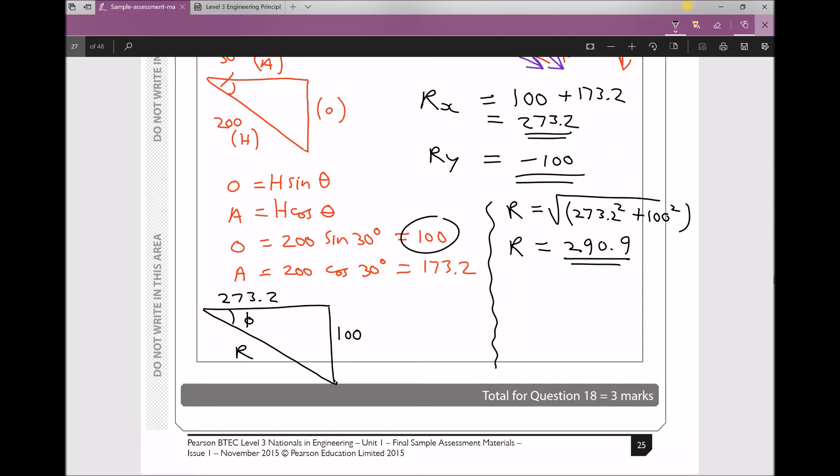To find our angle, we use tan(θ) = opposite/adjacent. But we're looking for θ, which is tan⁻¹(opposite/adjacent). So θ = tan⁻¹(100/273.2) = 20.1 degrees. However, this angle is below the horizontal or tilting downwards, so that represents a negative phase angle.